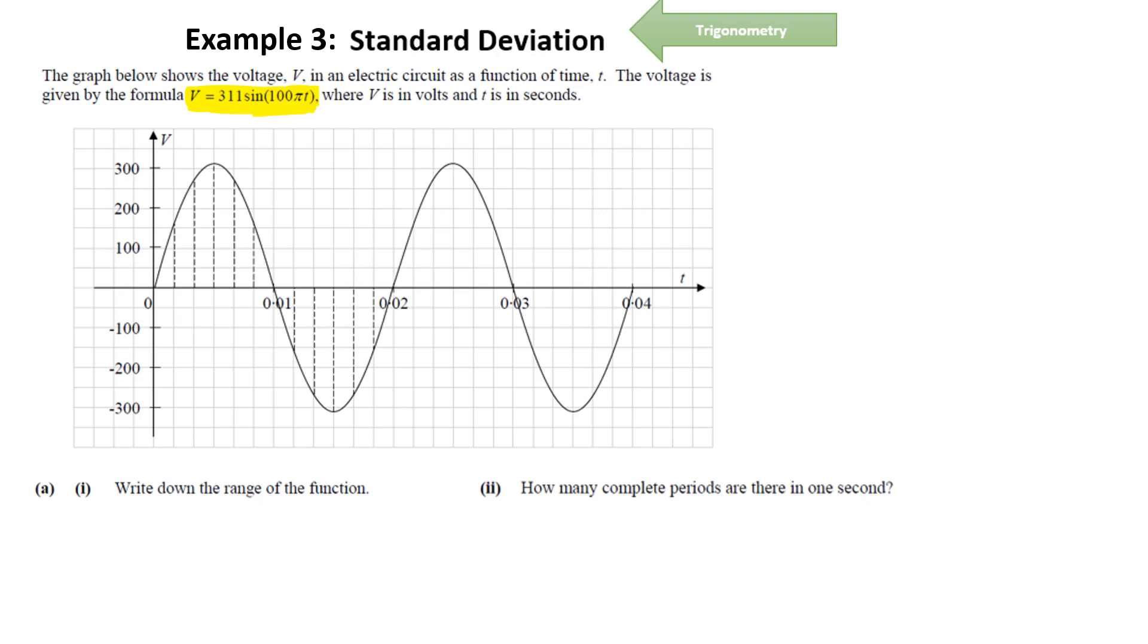So straight away we should be able to figure out that if we have 100 pi T, we're actually talking about radians. If they have not mentioned radians, you need to have figured that out. So we are talking about radians. So if you're using your calculator, you need to change your calculator into radian mode.